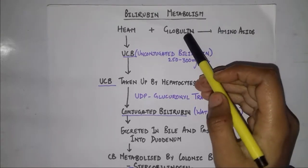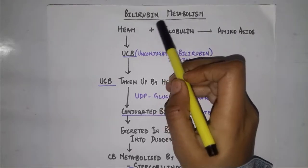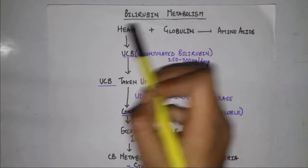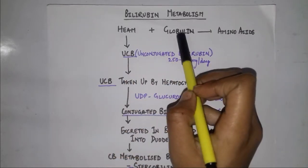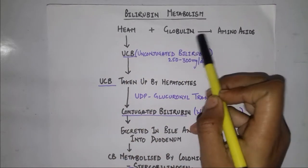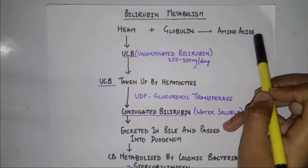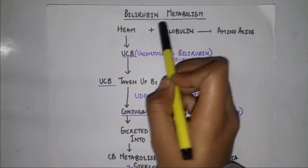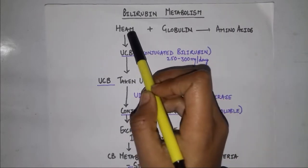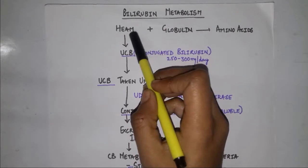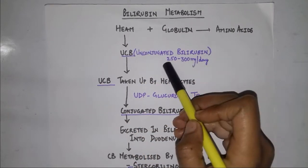In today's video, I'm going to talk about bilirubin metabolism. Firstly, hemoglobin is broken down into heme and globin. Globin is further broken down into amino acids, so we leave this out of the equation and focus only on heme. Heme is then converted into unconjugated bilirubin.